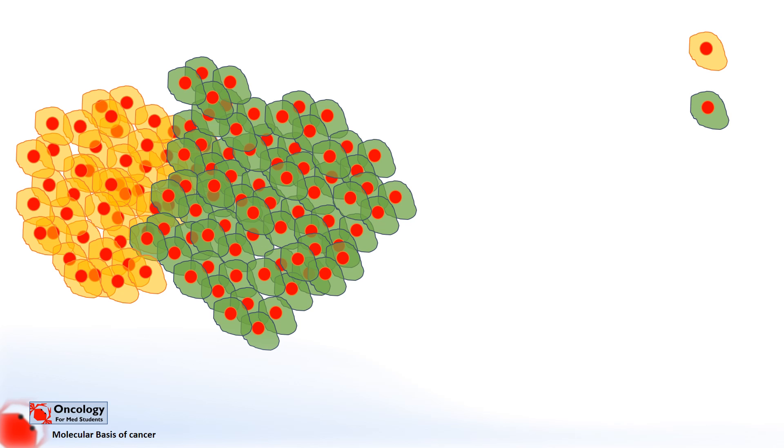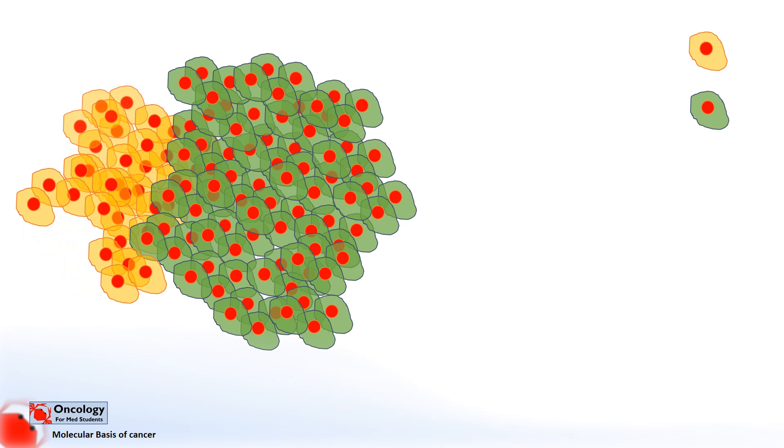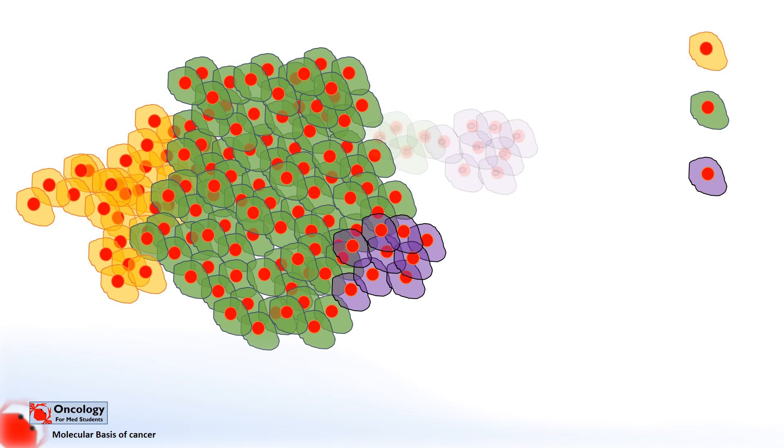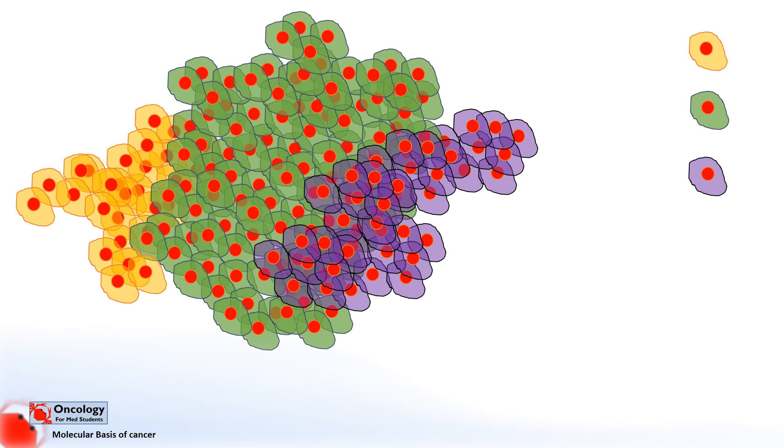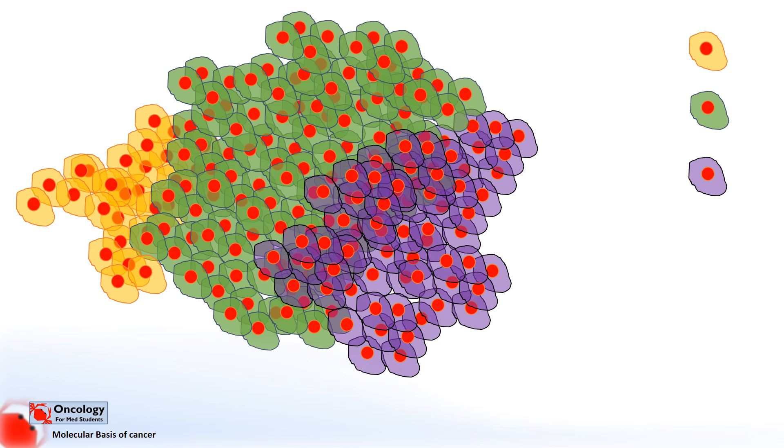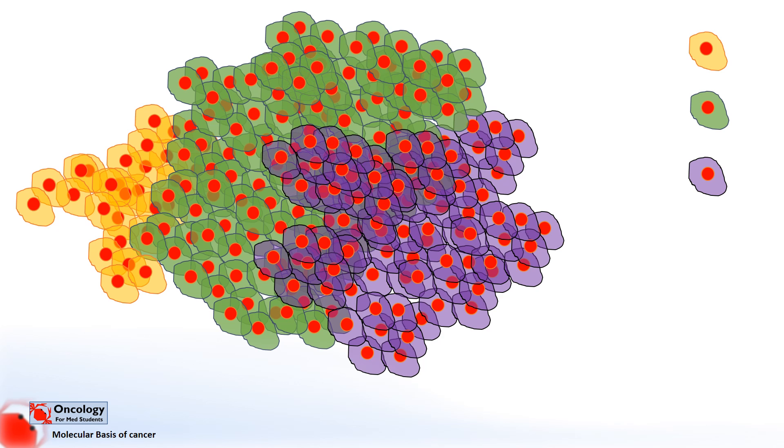Each successive generation of cells carries the previous cancerous mutations and has the potential to gain more. Eventually they out-compete the older generations of cells. Here we can see the purple cells have gained mutations which make them divide even faster than the previous generation.